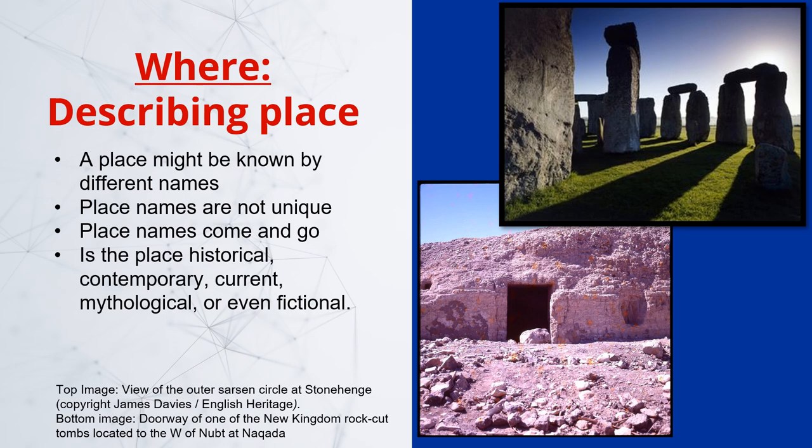Place names come and go. Countries and borders shift. Places are renamed. Counties and states redefined. Sites and buildings demolished or destroyed. So the metadata should acknowledge if a place name is current, true at the point of data creation, or referring to a historical place. Then there are the places that never existed except in myth or fiction, but still form the subject of a resource when depicted on artefacts or in texts — a stone carving depicting Valhalla or Asgard from Norse mythology would be an example of this.